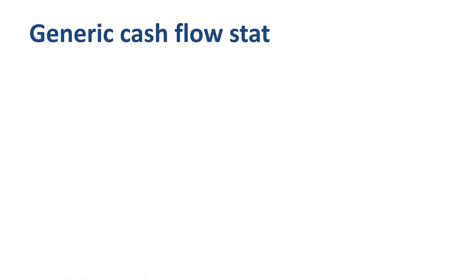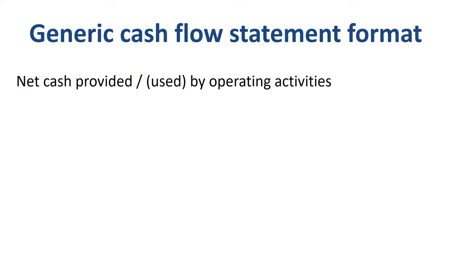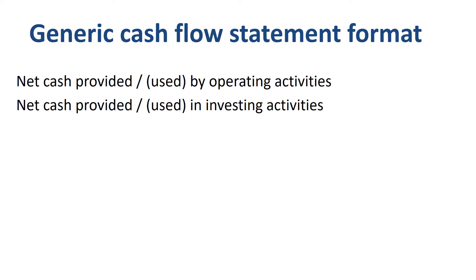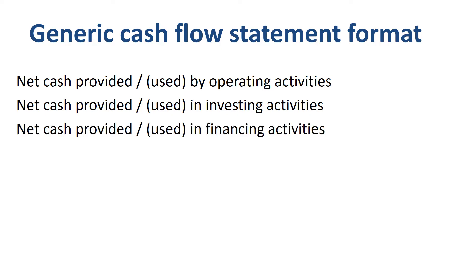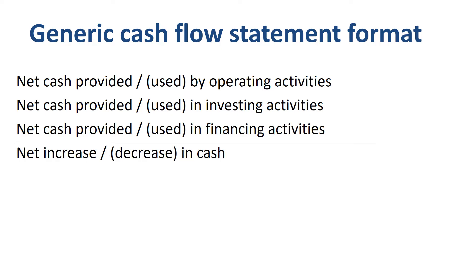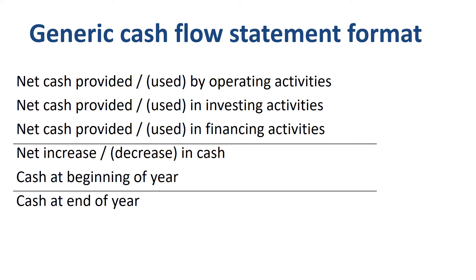What the direct method and the indirect method cash flow statement have in common is that they have three main categories: cash from operating activities, cash from investing activities, and cash from financing activities. Together these form the net increase or decrease in cash during the year. You then sum that net increase or decrease with the cash balance at the beginning of the year, and you should reconcile to the cash balance at the end of the year.